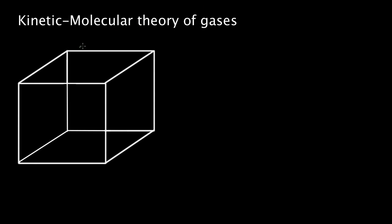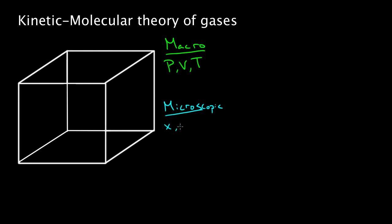The kinetic molecular theory of gases states that the macroscopic properties of a gas — like pressure, volume, or temperature — are just a result of the microscopic properties of the gas molecules, like their positions and speeds. The idea is that if you knew the speeds and the distribution of speeds and positions, you could figure out these macroscopic properties.